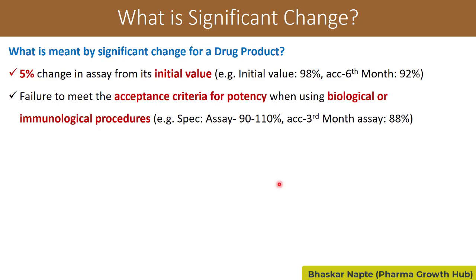The second point: failure to meet the acceptance criteria for potency when using biological or immunological procedures. These procedures yield a lot of variability, so a five percent variation is quite possible. Therefore, a five percent variation alone cannot be considered a significant change for these procedures. For those procedures, failure to meet the assay specification is considered a significant change. For example, if the assay limit is 90–110% and the accelerated third-month value is 88%, that is a significant change.